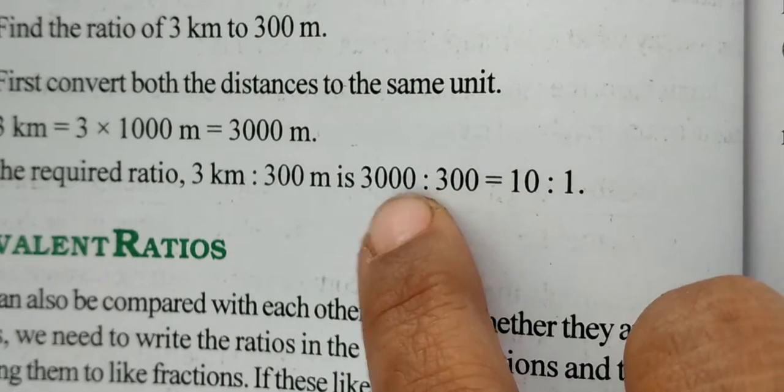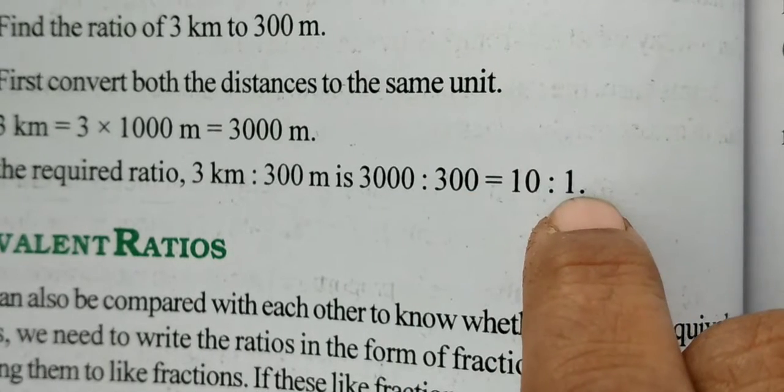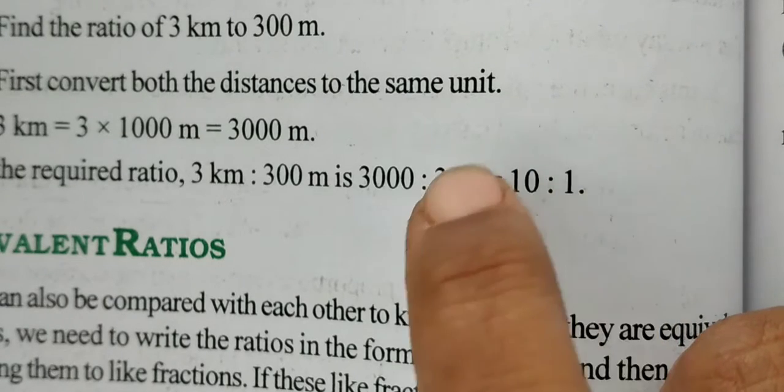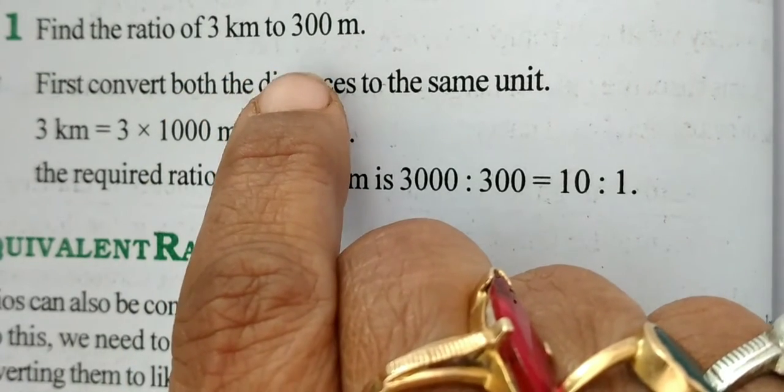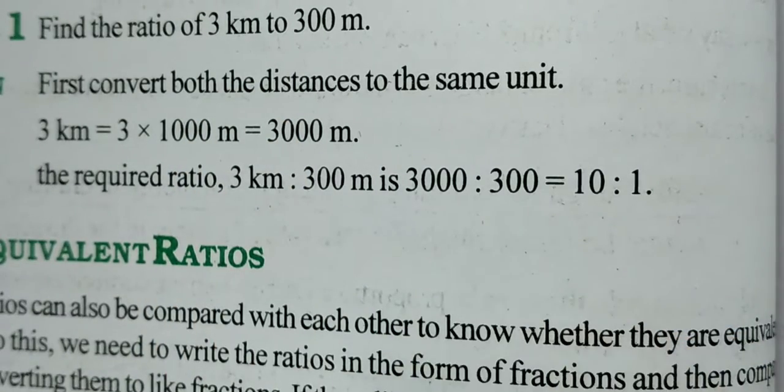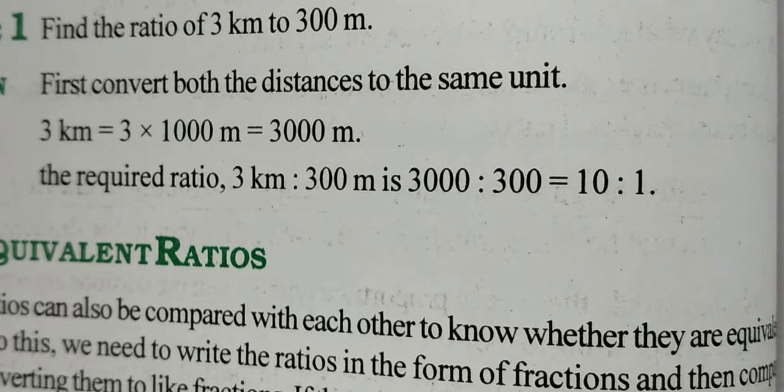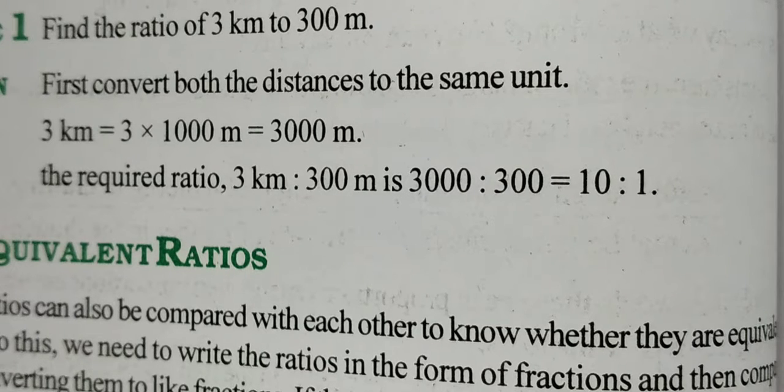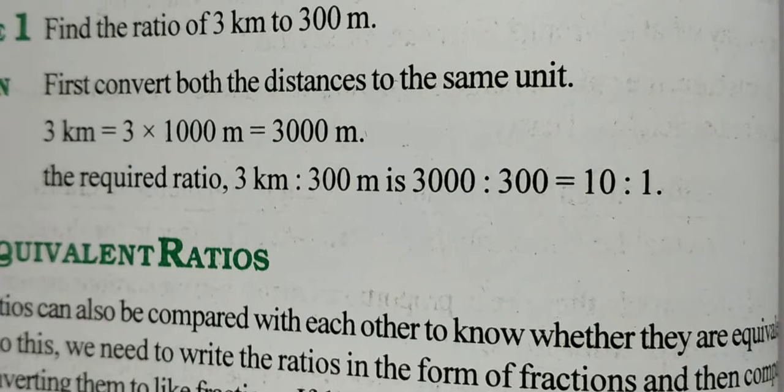Zeros got cancelled, 30 is to 3. 30 on dividing by 3 you get 10, and 3 divided by 3 is 1. So 10 is to 1 is the ratio of 3 kilometer to 300 meter. This is how you have to do the calculation when you are asked to find out the ratio of given quantities. First check whether the units are same. If the units are not same, then convert to the same unit, find its reduced form, and you get the ratio.